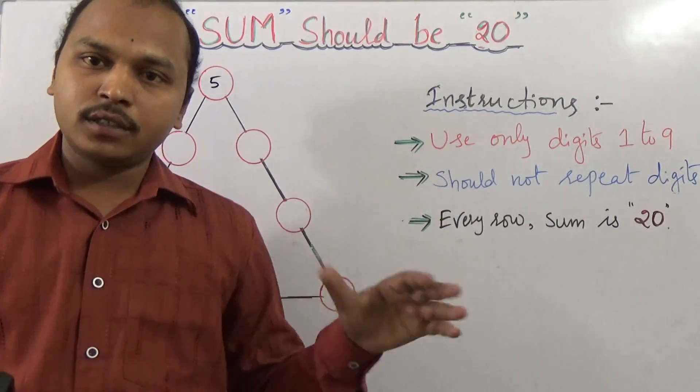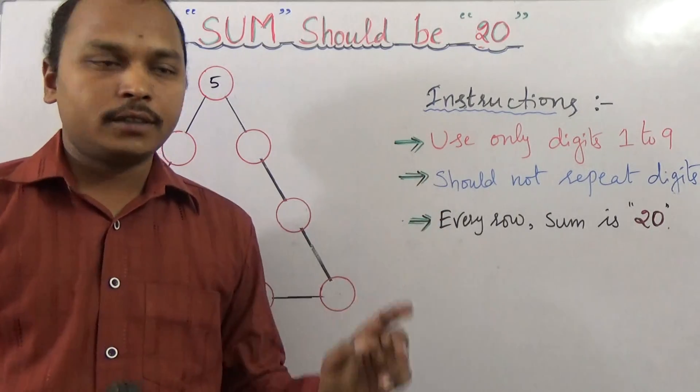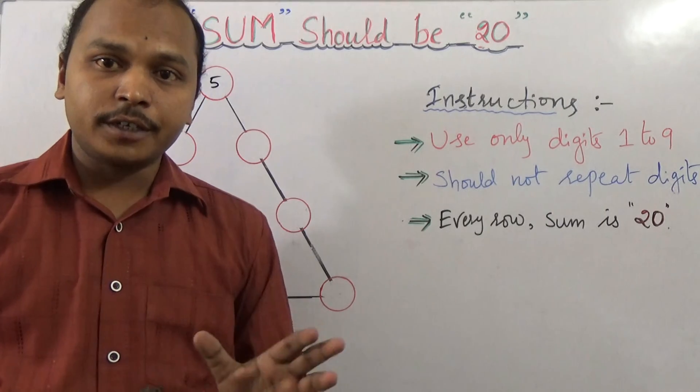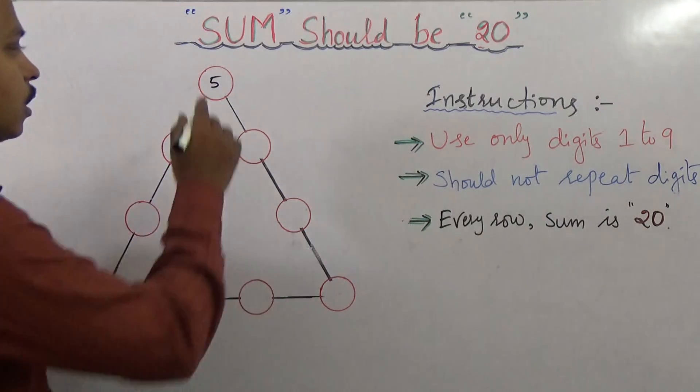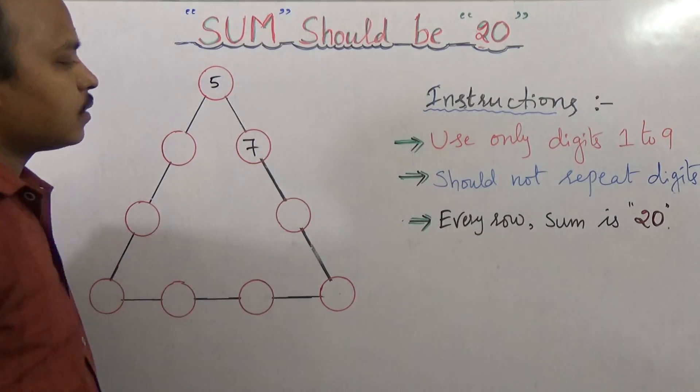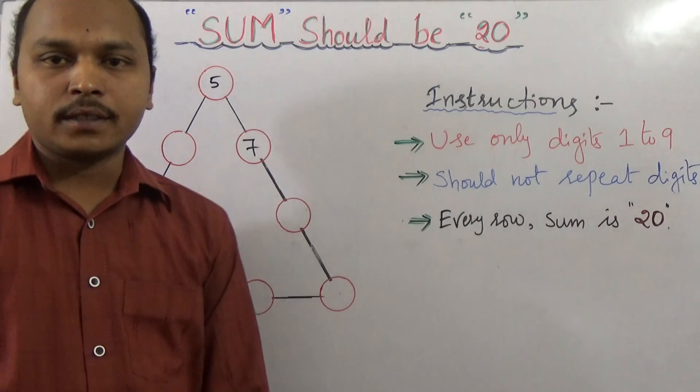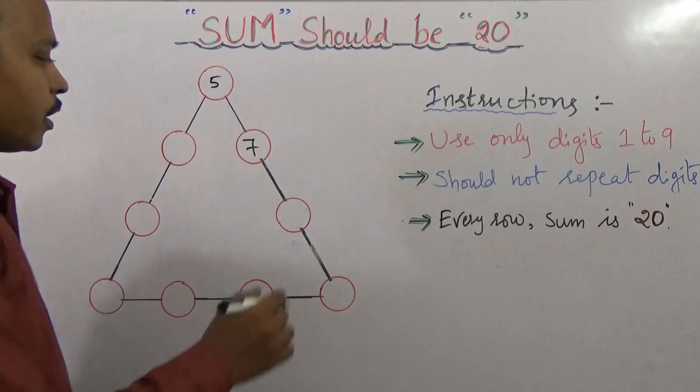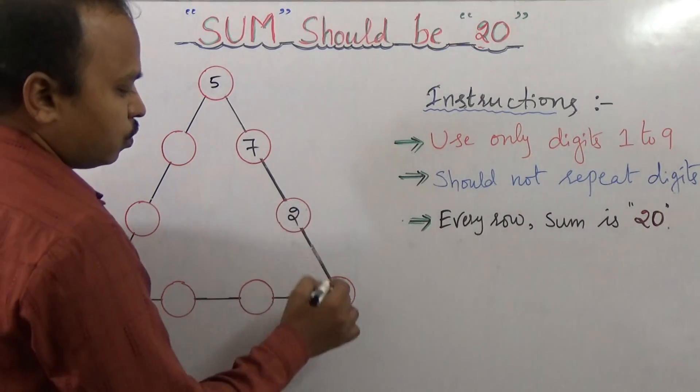The main important thing is how we need to arrange the nine digits in the circles. Every row sum should be 20. Okay, for example: 5, 7, 7... this should not repeat. 5 plus 7 is 12, and you take 2...